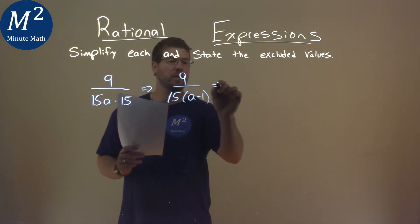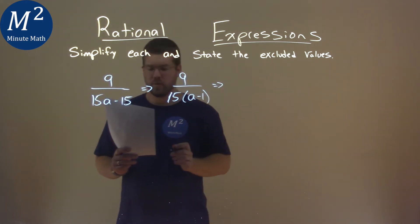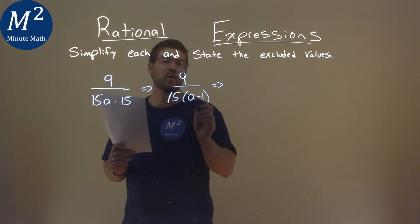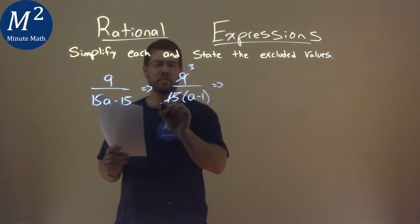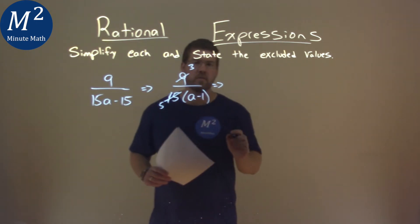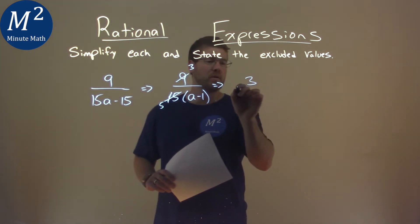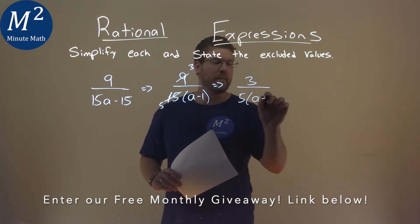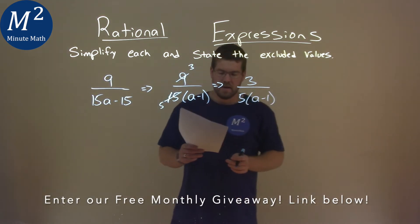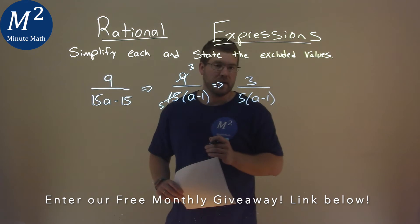And let's keep on going. Well, 15 and 9 both share a divisor. 3 goes into both of them. 3 goes into 9 three times, and to 15, five times. So simplifying this, we have 3 over 5 times an a minus 1, and we're done with the simplification.